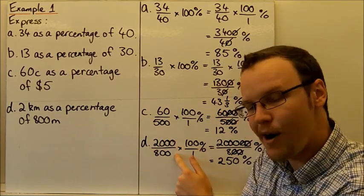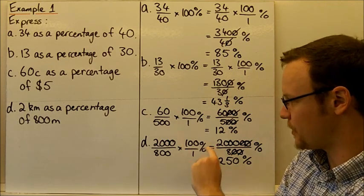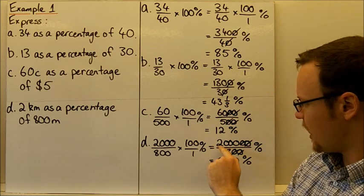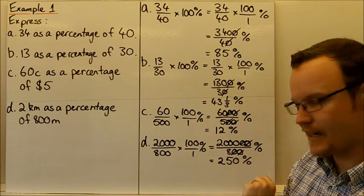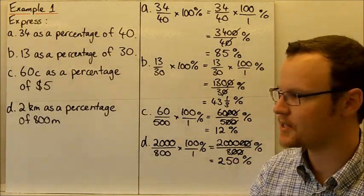Multiply the top by 100 and the bottom by 1%. And that yields 200,000 over 800. We can cancel the zeros. And 2,000 divided by 8 is 250%.